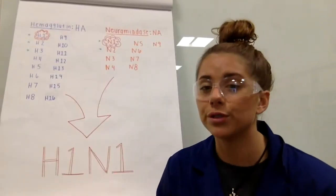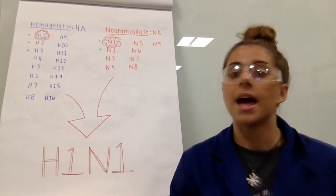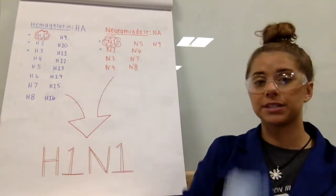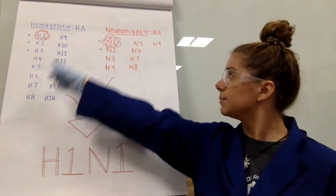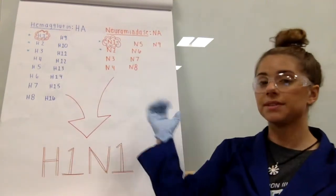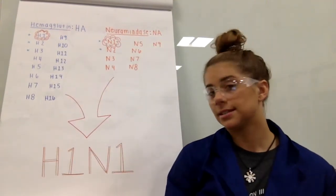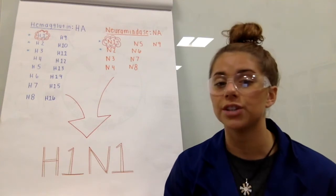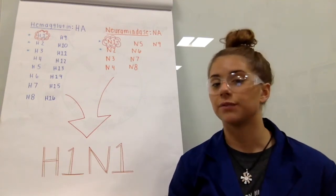These two proteins are known by scientists as HA and NA, respectively. There are 16 subtypes of HA and 9 subtypes of NA. Scientists use these subtypes to designate which combination of proteins make up a specific influenza A virus.